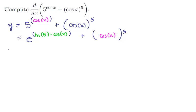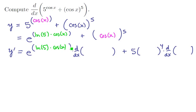We're going to have that y prime is equal to the derivative of e to the blank is e to the blank times the derivative of blank. The derivative of blank to the 5 is 5 times blank to the 4th times the derivative of blank. And now let's fill in the blanks. Over here we've got the green ln of 5 times cos of x. And over here we've got the pink cos of x.